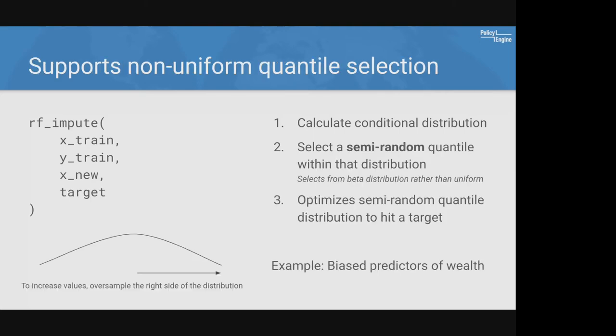There are ways to enhance RF-Impute. If you have a target value — for example, the Survey of Consumer Finances says there's 100 trillion in total wealth but your imputation only produces 80 trillion — you can set a target value. Instead of selecting quantiles randomly, it selects quantiles in a biased way to hit that target, oversampling values on the right side of the distribution.